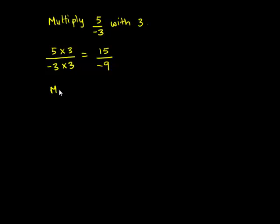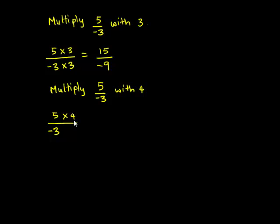Similarly, the next equivalent number of 5 upon negative 3 can be obtained when we multiply 5 upon negative 3 by 4. When multiplied by 4 both in the numerator and in the denominator, we get 5 times 4 is 20, upon negative 3 times 4 is negative 12.